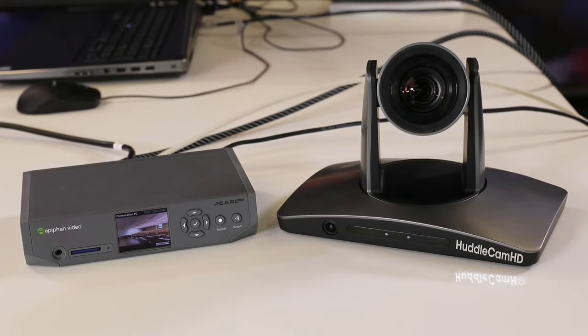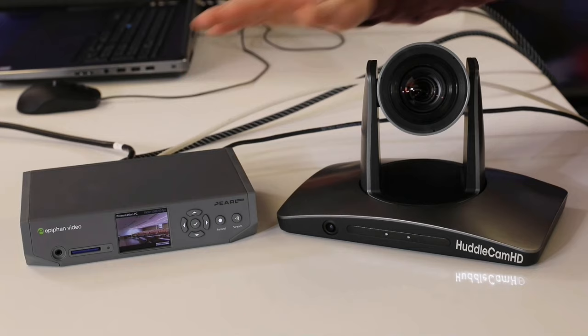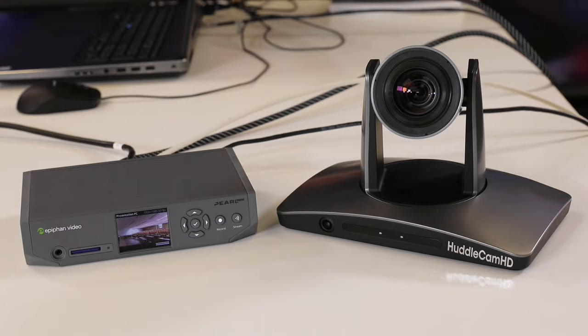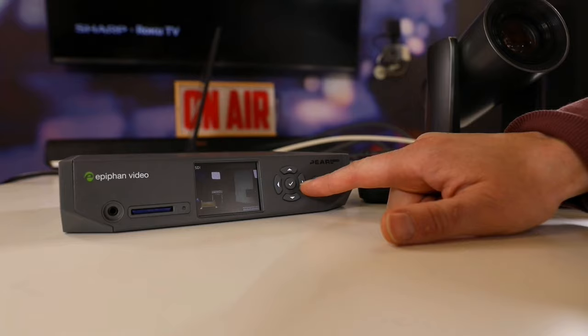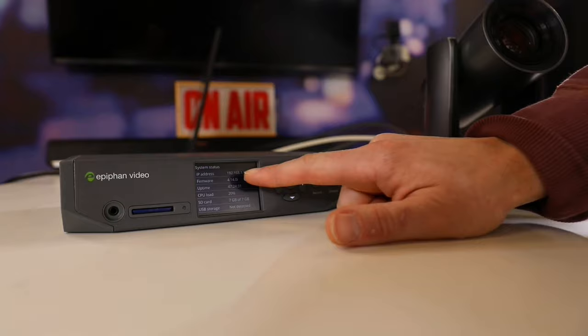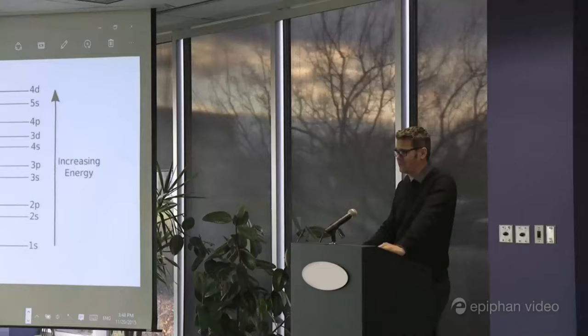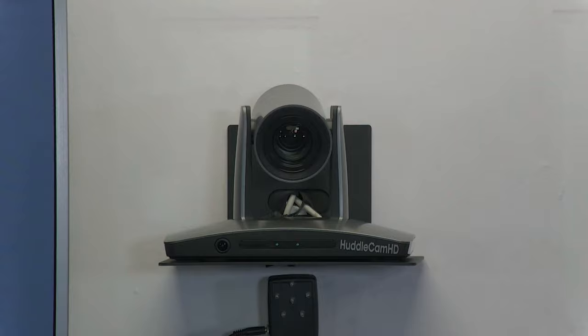In this video, we are going to set up an Epiphan Pearl Nano with the HuddleCam HD Simple Track 2 to show how it can be used for lecture capture. The Epiphan Pearl is the ideal lecture capture recording device that can be easily integrated into popular learning management systems such as Panopto and Kaltura. The HuddleCam HD Simple Track 2 is an auto-tracking camera that can automatically follow a presenter from up to 55 feet away when installed in the classroom.